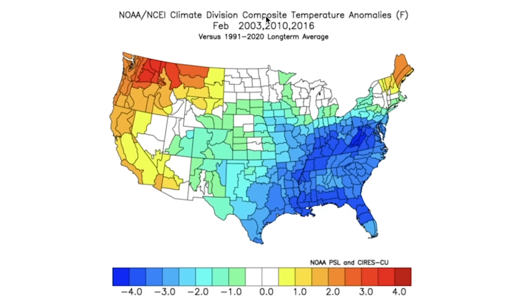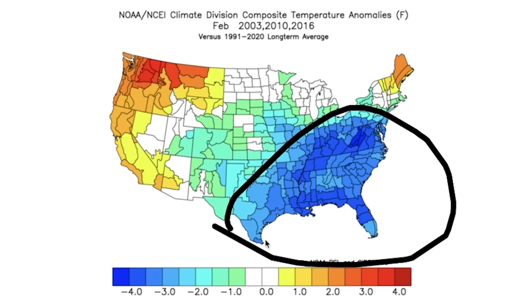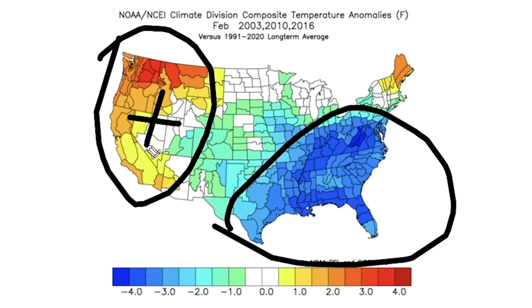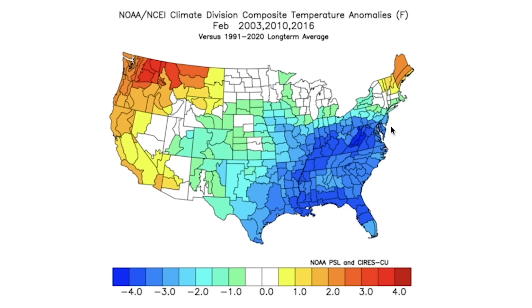February looks to be even colder than January. Again, the heart of the cold is over the southeast, with very warm temperatures along the western seaboard — positive PNA — helping drive that cold into these areas. The PNA is just so important; I cannot stress that enough. I've talked about it all year long because it really is a driving factor in what weather we can expect moving forward.